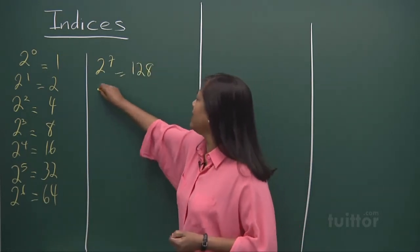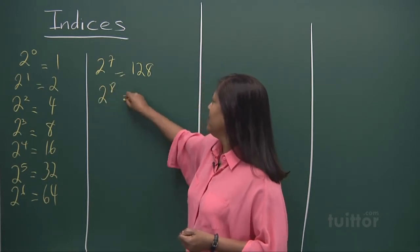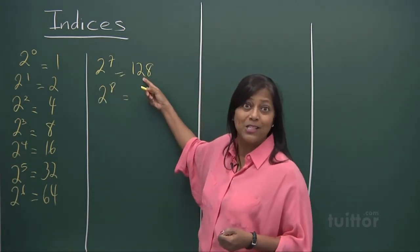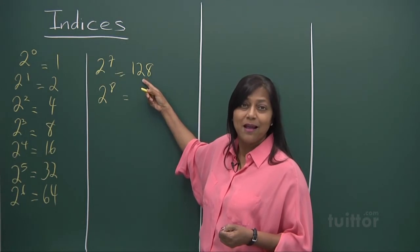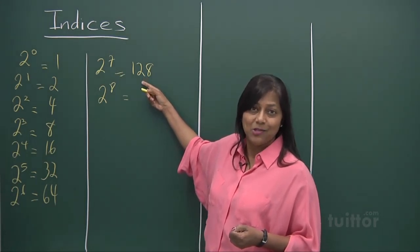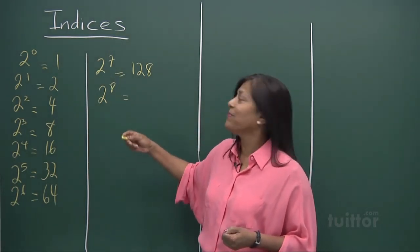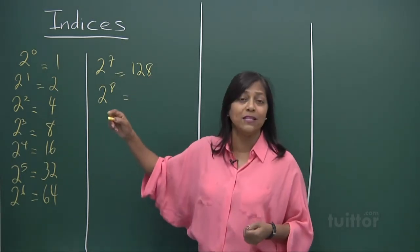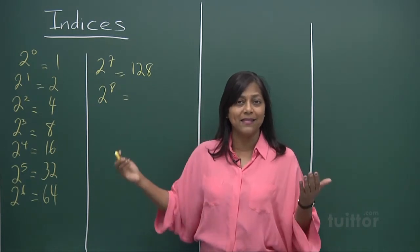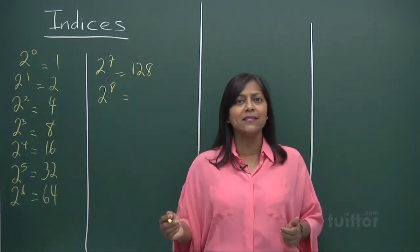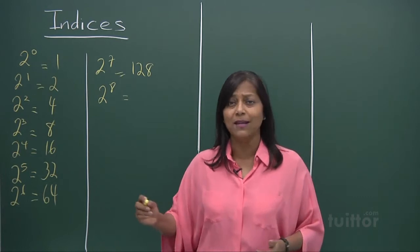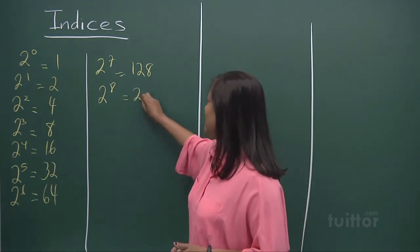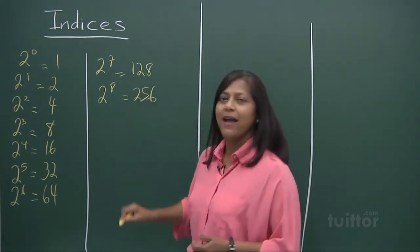Now let's look at 2 to the power of 8. You're going to multiply this by 2. In other words, 128 is repeated 2 times. 120 and another 120 is 240. 8 plus 8 is 16. Add 16 to 240. What you get? 2, 5, 6. Excellent.